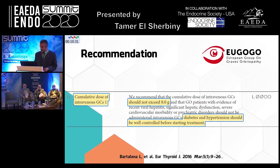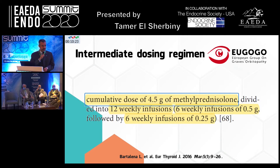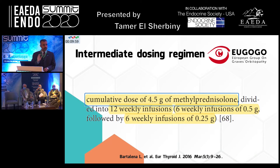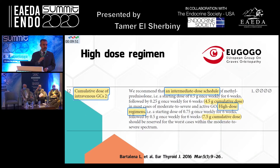The recommendation is IV glucocorticoids not exceeding a cumulative dose of 8 grams. The intermediate dosing regimen gives a cumulative dose of 4.5 grams of methylprednisolone: 0.5 grams weekly for the first six weeks, then 0.25 grams weekly for the next six weeks. This applies to most patients with moderate to severe Graves' orbitopathy. Only the severest cases receive the high-dose regimen: 0.75 grams weekly for six weeks, then 0.5 grams weekly for six weeks, a cumulative dose of 7.5 grams of methylprednisolone.